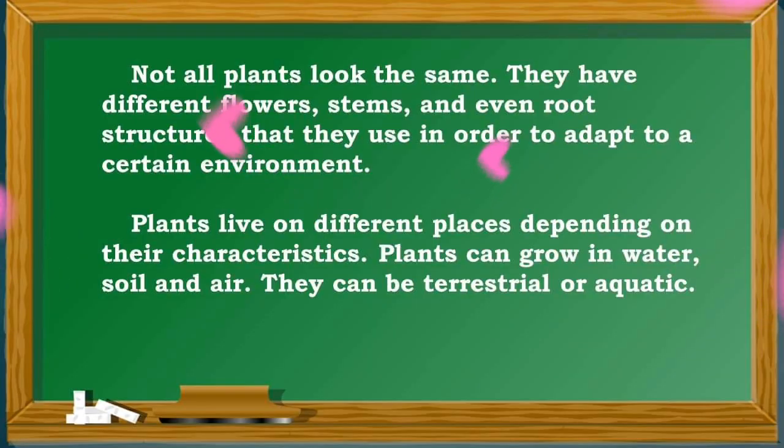Not all plants look the same. They have different flowers, stems, and even root structures that they use in order to adapt to certain environments. Plants live in different places depending on their characteristics. Plants can grow in water, soil, and air. They can be terrestrial or aquatic.